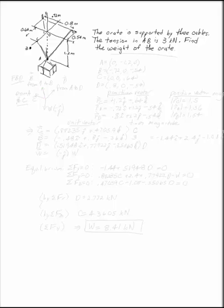The crate is supported by three cables, where the tension in AB is 3 kN, and we want to find the weight of the crate. The first thing you want to do is draw your free body diagram.